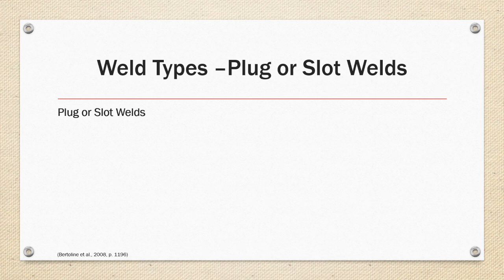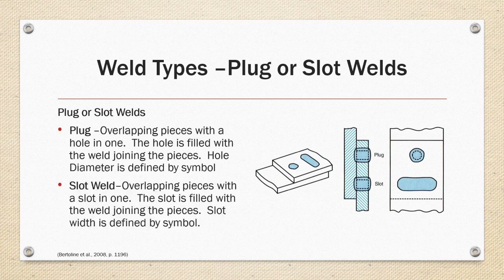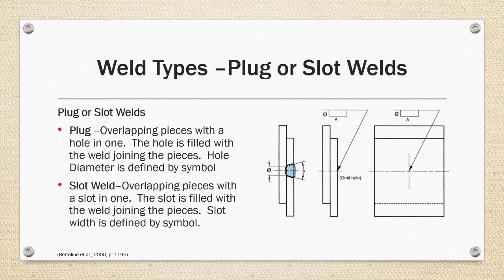Plug or slot welds: plug welds are used on overlapping pieces with a hole in one of the pieces; the hole is filled with a weld joining the pieces together, and the hole diameter is defined by the symbol. A slot weld is very similar — it joins overlapping pieces with a slot in one, the slot is filled with weld, and the slot width is defined by the weld symbol. An example plug weld symbol defines a diameter, an angle of the hole, and the location of the weld.